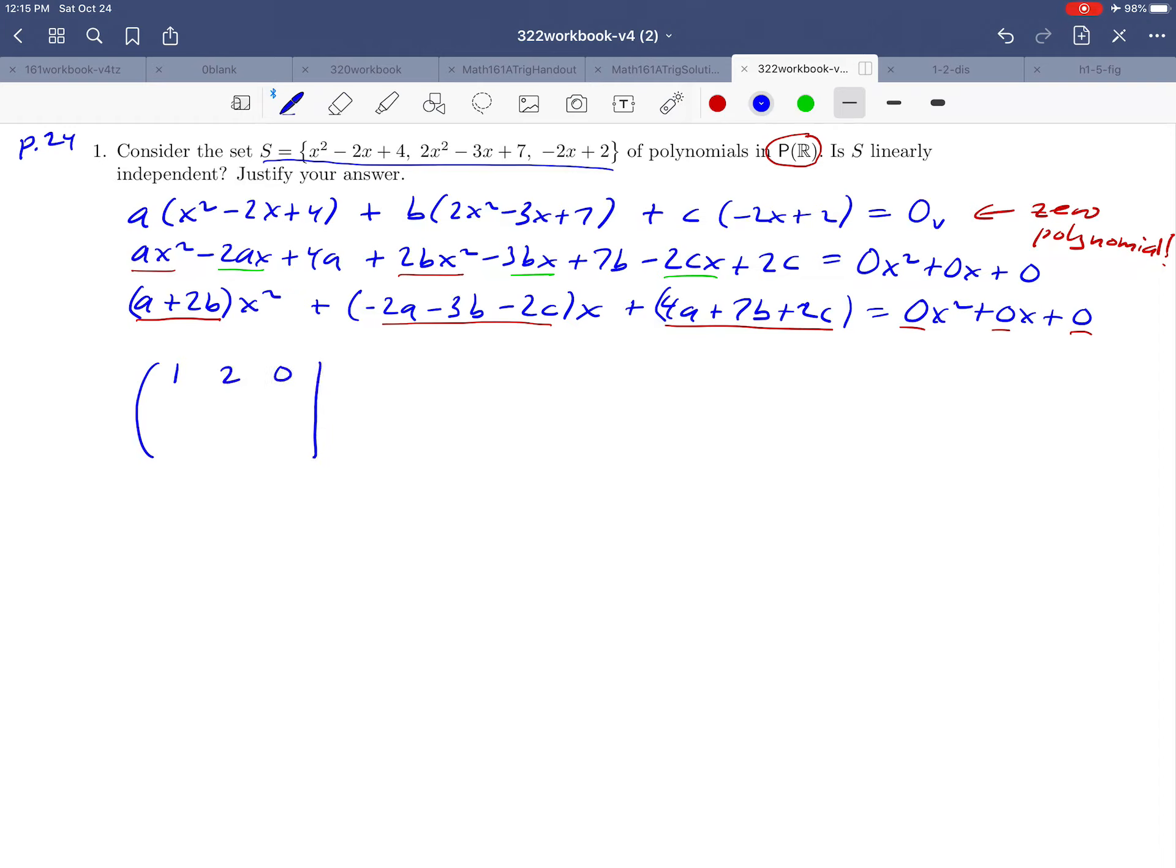1, 2, 0, negative 2, negative 3, negative 2, 4, 7, 2. And on the right-hand side, we would have 0, 0, and 0. You can confirm that step and convince yourself that that really is the system of equations that we explained up here. We want to solve that for A, B, and C.